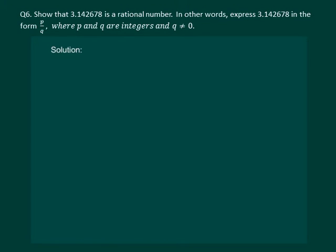Let us read the question. Show that 3.142678 is a rational number. In other words, express this number in the form p by q where p and q are integers and q is not equal to 0.